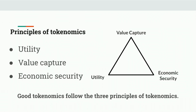Demand-side tokenomics is made up of three principles. These are the principles of tokenomics, and if you meet these principles, your token will necessarily be valuable, your protocol will be valuable, and it will be secure and able to sustain itself for the long term. Those are: utility — the value created by your protocol for users; value capture — which is analogous to profit in a business, the amount of value you're able to accrue to the token or distribute out to holders; and economic security — which is distinct from technical security. Good tokenomics follow these three principles without fail.